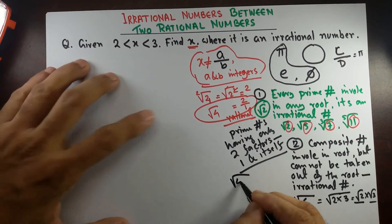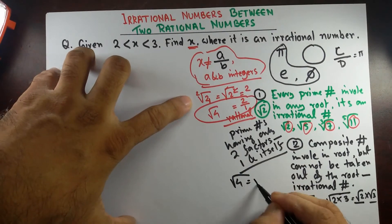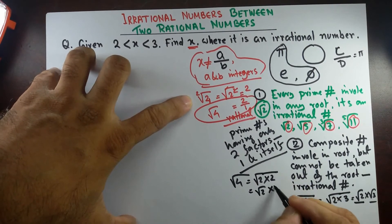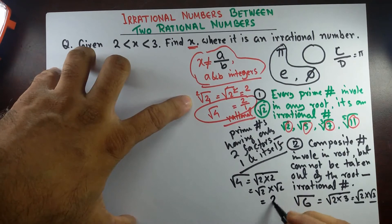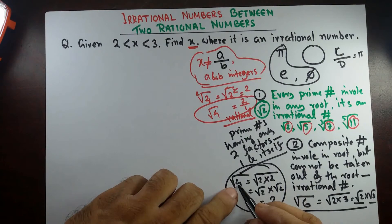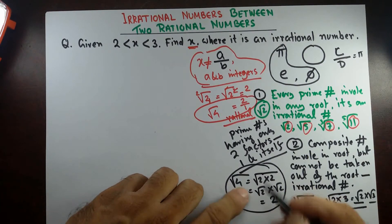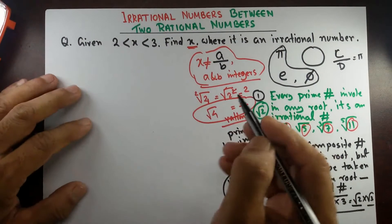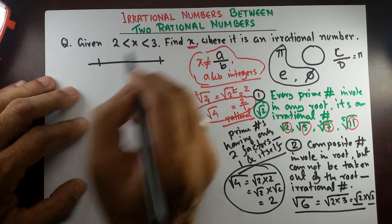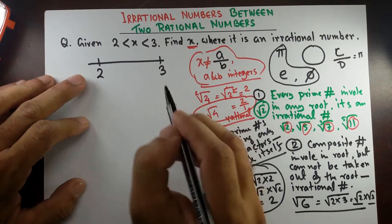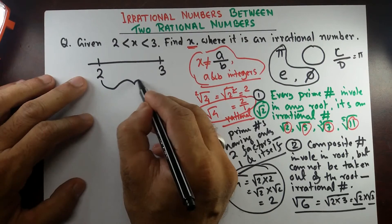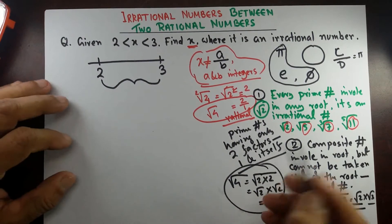But whenever you have 4 under the square root, as we've seen before, it can be written as 2 times 2, so square root 2 times square root 2 can be taken out as 2 — and this is not an irrational number; it is a perfect square. So let's go back to our original question: find x between the two rational numbers 2 and 3, where x is an irrational number.